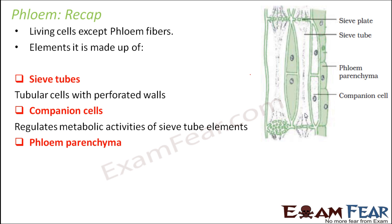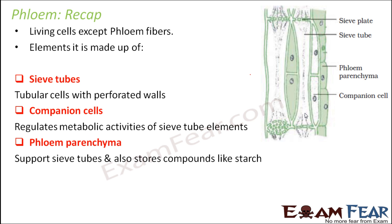Next is phloem parenchyma. These are the normal parenchyma cells which help in storage of food. They support the sieve tubes and also store compounds like starch, so they basically help in storage.